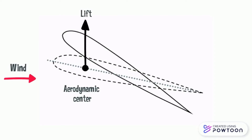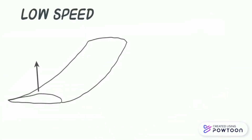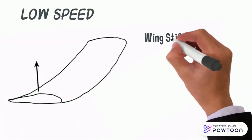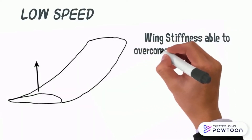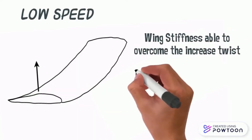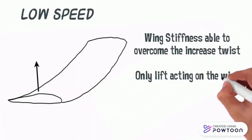The aerodynamic center is generally forward of the elastic center. When flight speed increases, lift increases, and this will cause a moment at the center of twist to increase. At low flight speed, wing stiffness is able to overcome the increasing twist. Hence, only lift is acting on the wing.